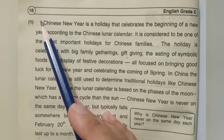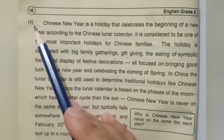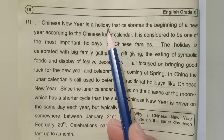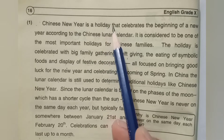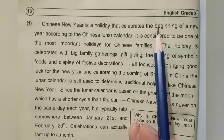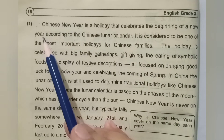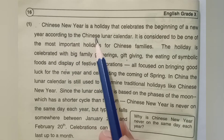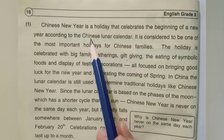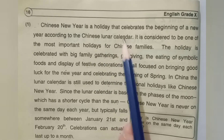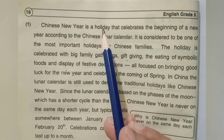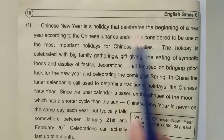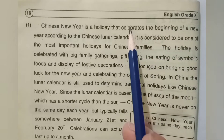Let's start our lesson with paragraph number one. Chinese New Year is a holiday — chini saale no ek chutti hoti hai — that celebrates the beginning of a new year according to the Chinese lunar calendar. Chini kumri calendar ke mutabiq ek naye saal ke aaghaz ko manati hai.